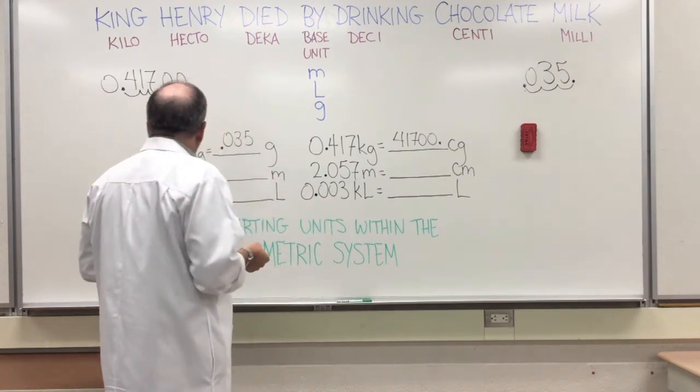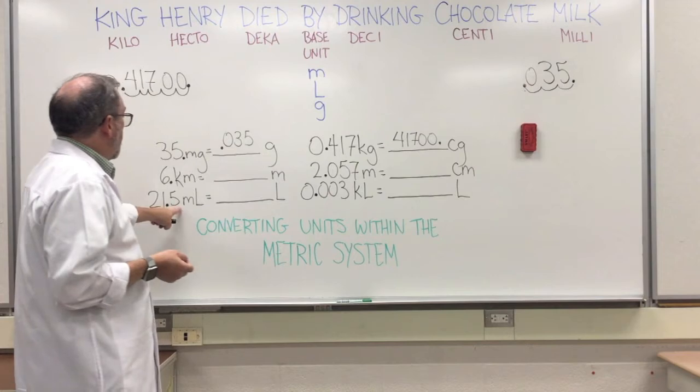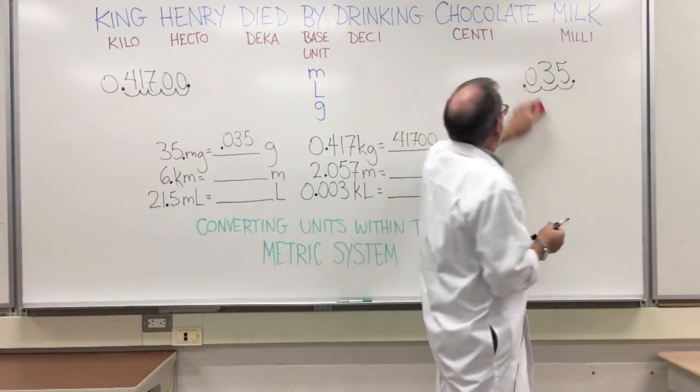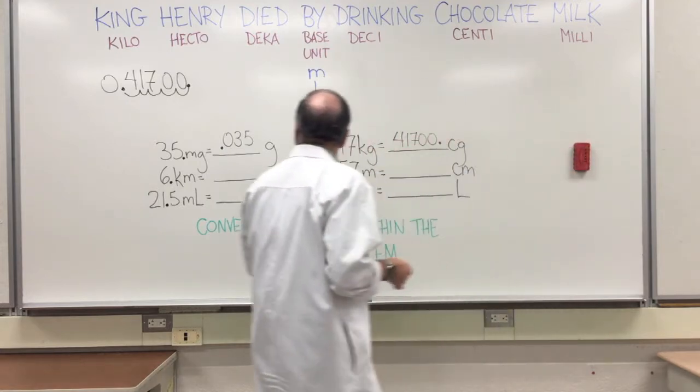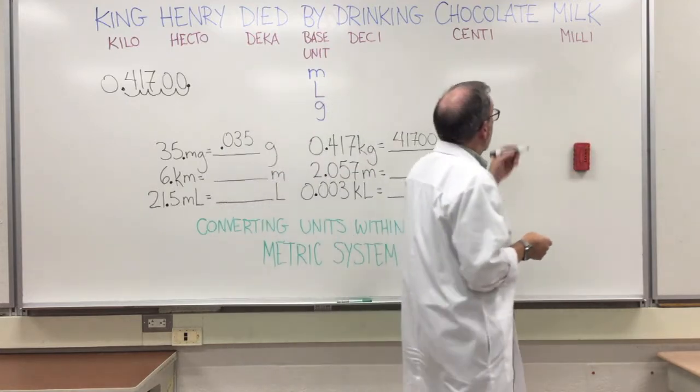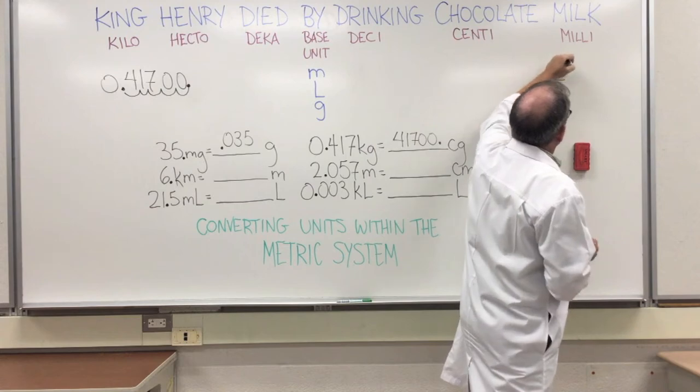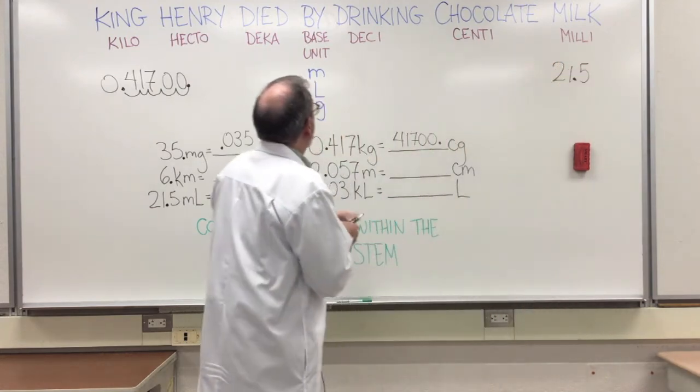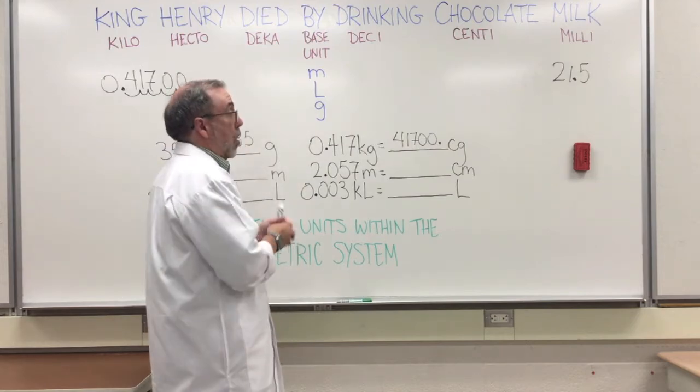Let's try one more. We'll go with 21.5 milliliters to liters. So 21.5, and we want to go to here, to liters. So we're gonna go to the left - one, two, three spaces.